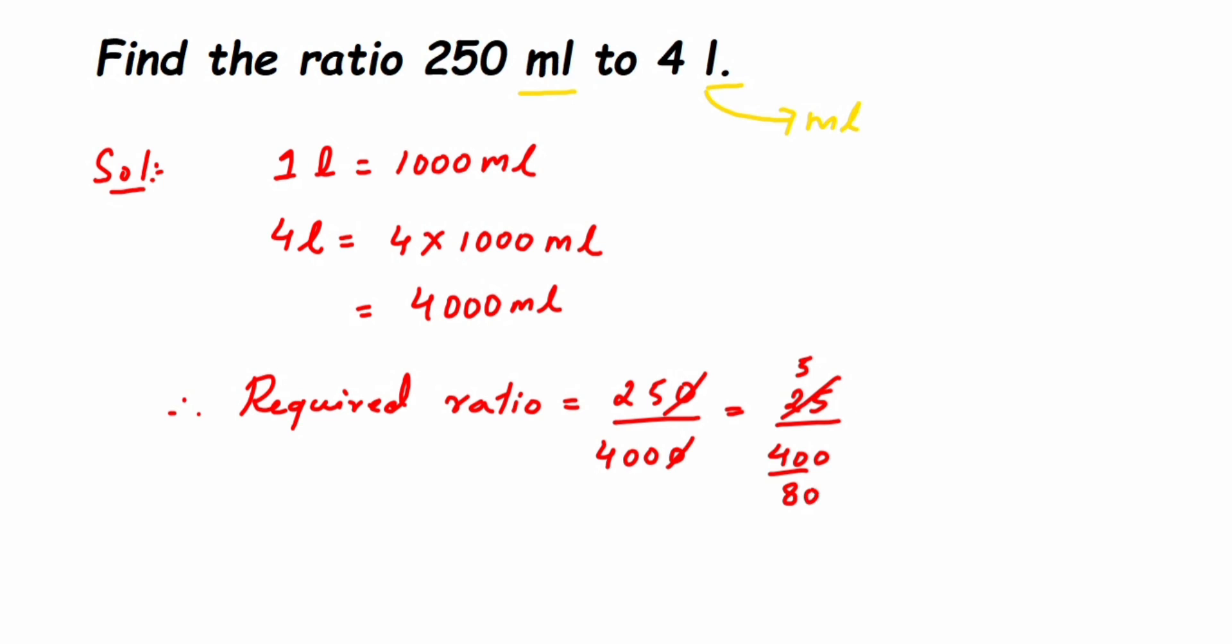Now again, 80 can be cancelled in the 5 table. This is 5 times 1. Here 8 doesn't go, so 5 times 1 is 5, so 3 is the remainder, which makes the number 30. 5 times 6 is 30, so that makes the number 16. This will be equal to 1 upon 16, so the ratio will be 1 is to 16.